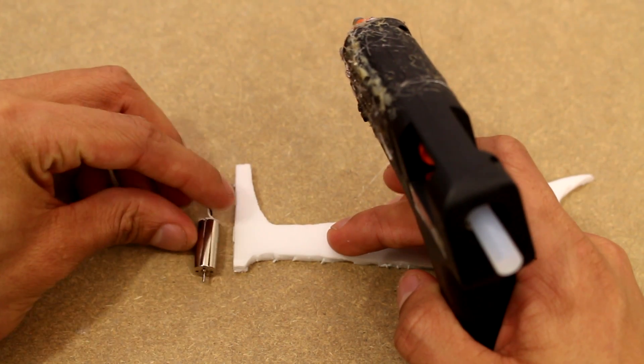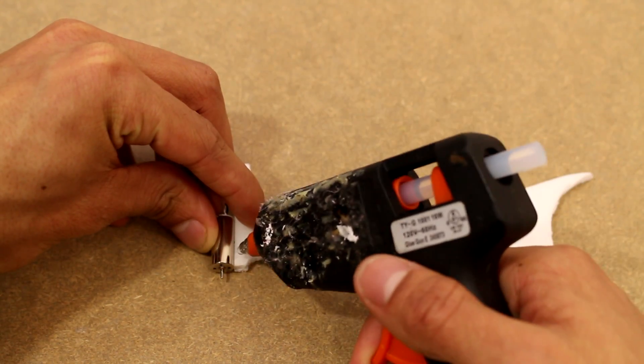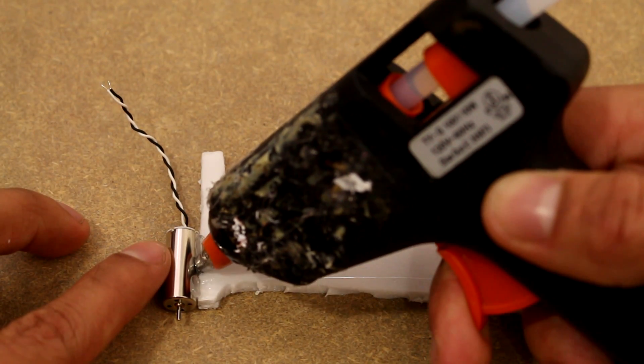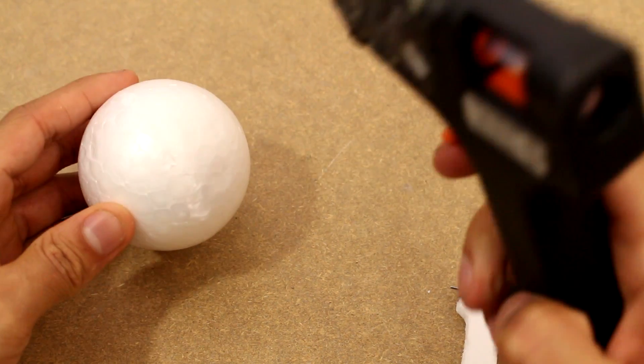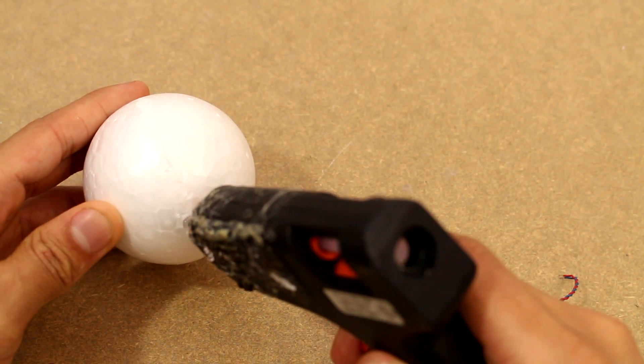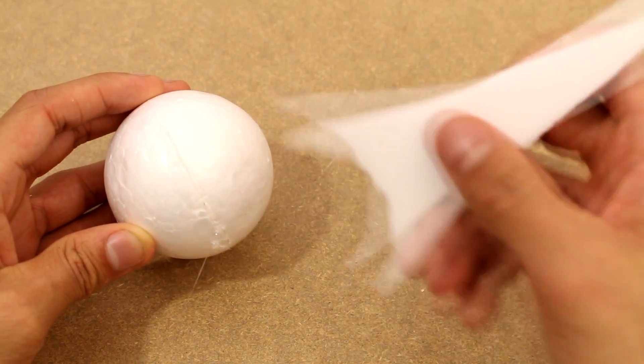Now I'm going to take one of the motors and glue it onto one of the arms, and then do that for the other three arms. Once we have that done, I'm going to take this foam ball that I got from the dollar store and glue each arm to it.